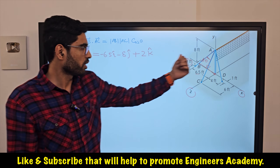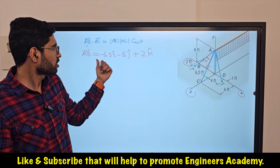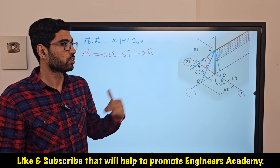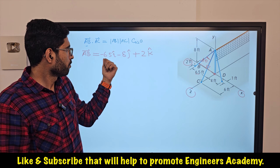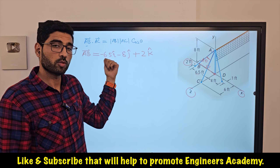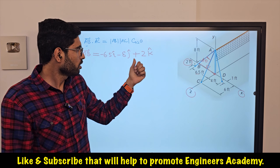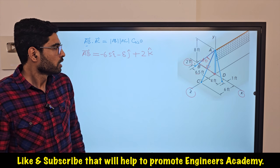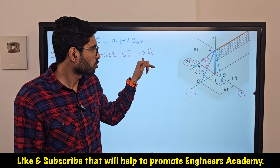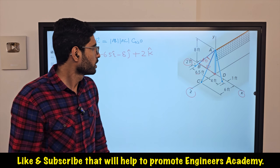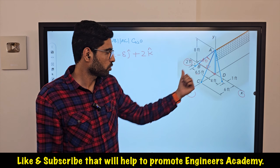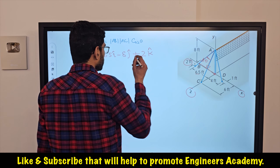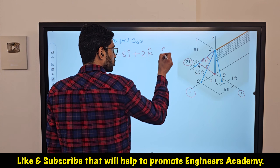So the position vector AB is -6.5i - 8j + 2k. The distance between A and B along the X-axis is 6.5 feet; the negative sign tells us point B is toward negative X. Along Y it is 8 feet below A, and along Z it is 2 feet toward positive Z. The units are in feet.